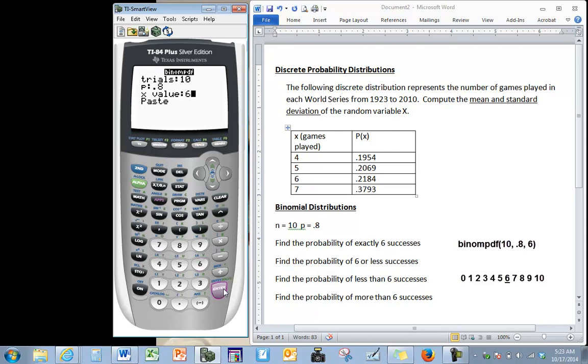If you don't have stat wizards or if your stat wizards is off you would see this screen and you would have to manually enter in 10 comma .8 comma 6. So once we press enter we find that the probability of achieving exactly six successes is .088.